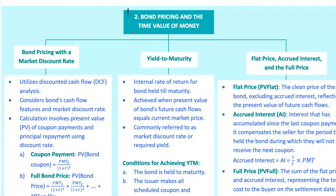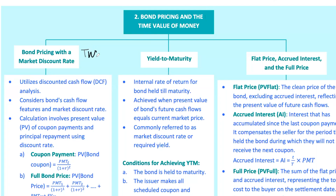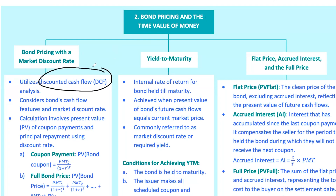First things first, bond pricing. It all boils down to one thing: the time value of money. What does that mean? Simply put, a dollar today is worth more than a dollar tomorrow, because you can invest that dollar and earn interest. This concept is at the heart of how we price bonds using discounted cash flow, DCF, analysis.